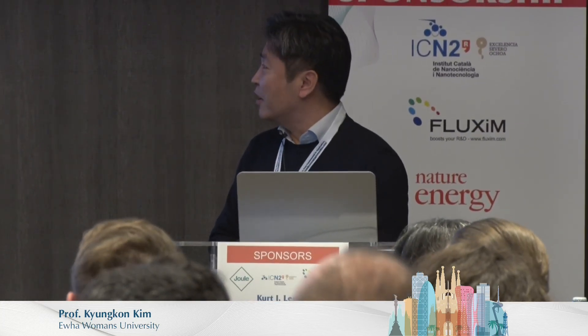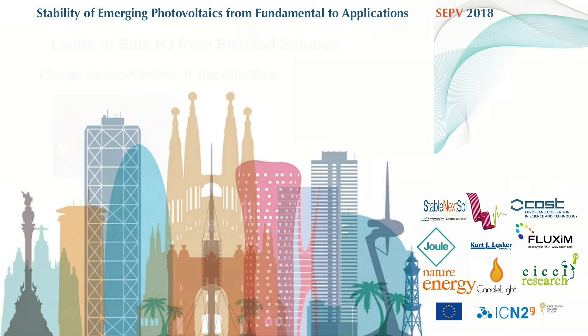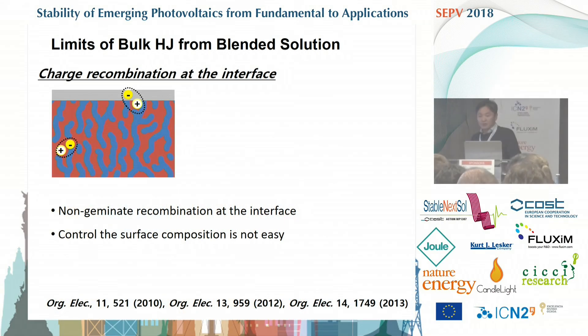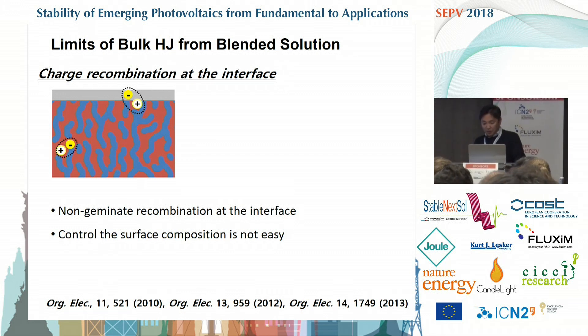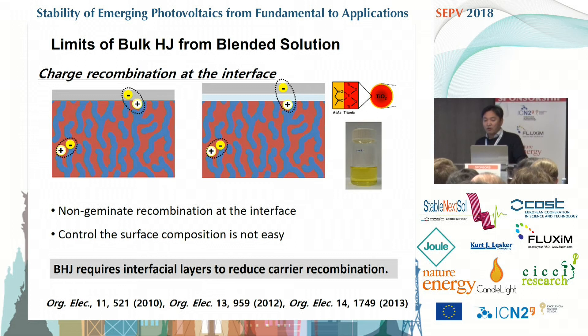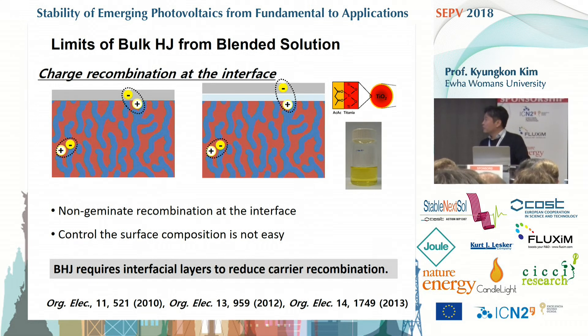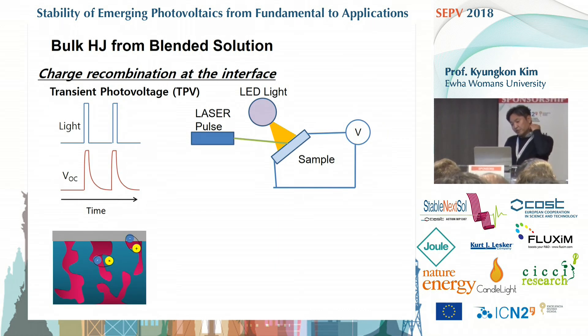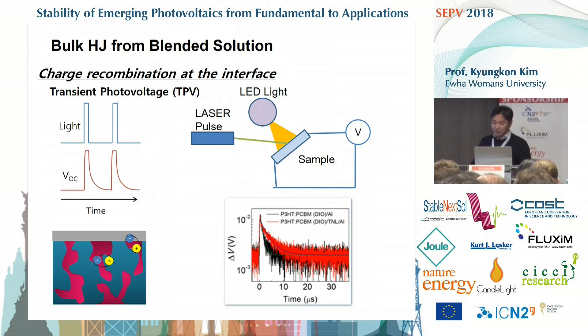Today I want to talk about the effect of some organic stabilized nanoparticles on the stability of OPVs. As you may know, the interfacial layer is very important in reducing charge recombination at the interface. That's why we have to introduce some kind of metal oxide nanoparticles or some polyelectrolyte materials as well. The effect of this kind of interfacial layer is clear if you take a look at VOC transient photovoltaics experiments — it reduces charge recombination at the interface.